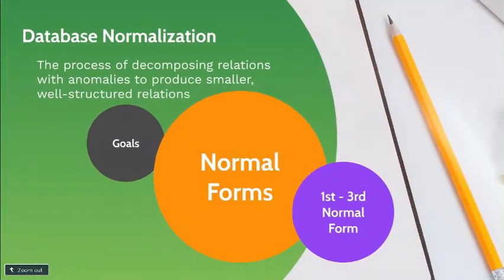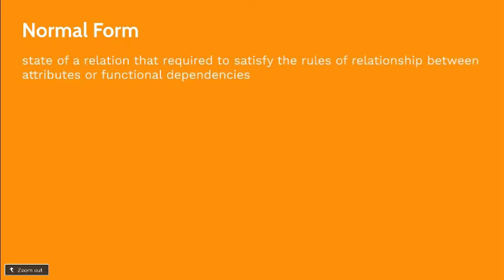The steps of database normalization rely on the state of a relation. These are rules to satisfy the relationship between attributes, or functional dependencies. This is also known as the normal form.